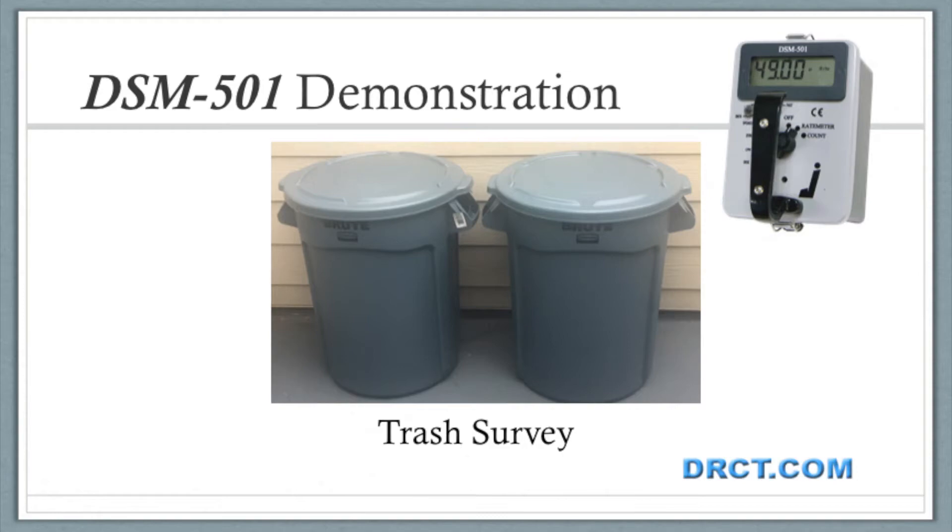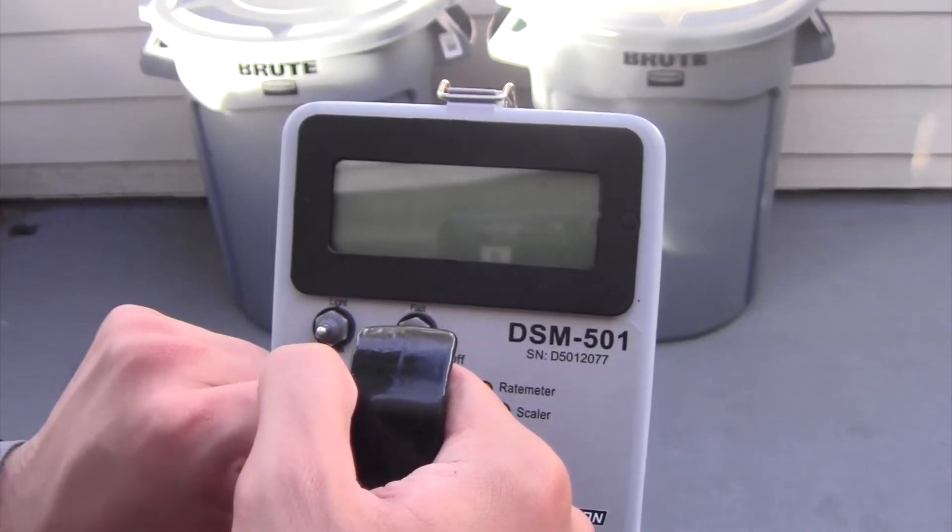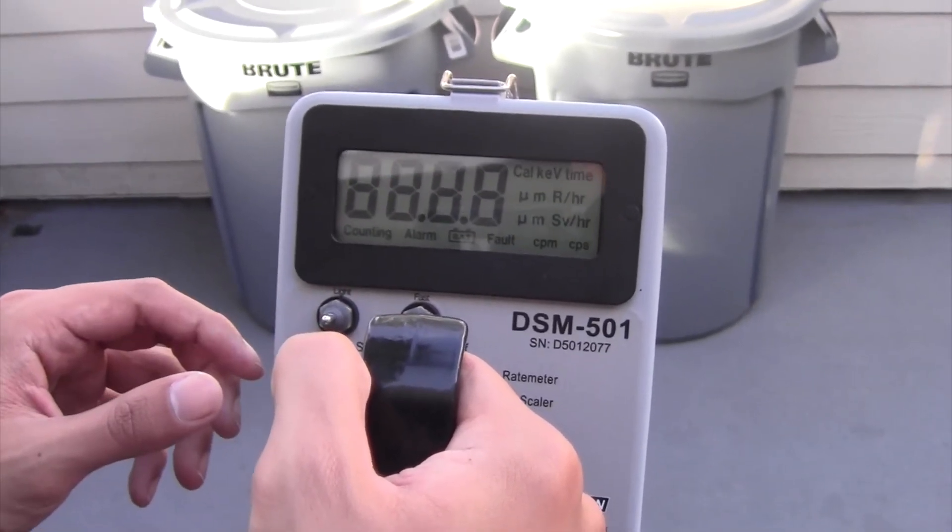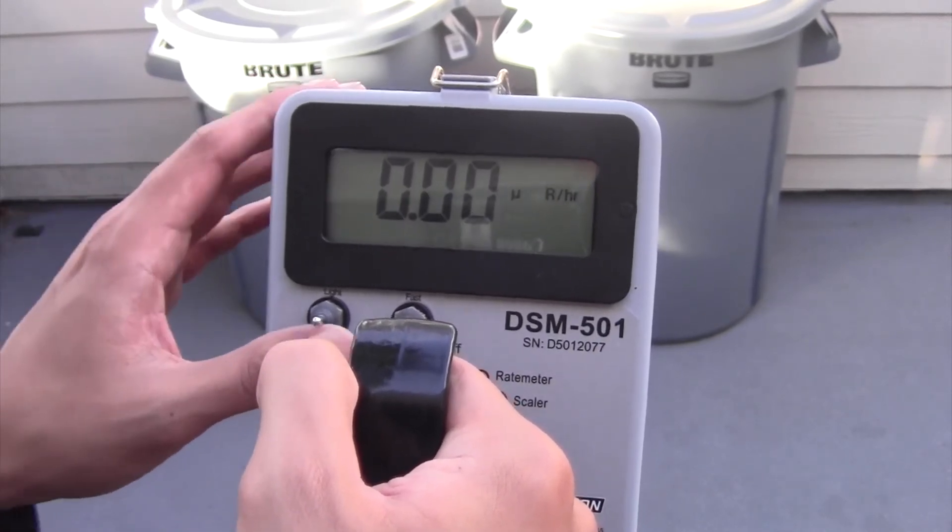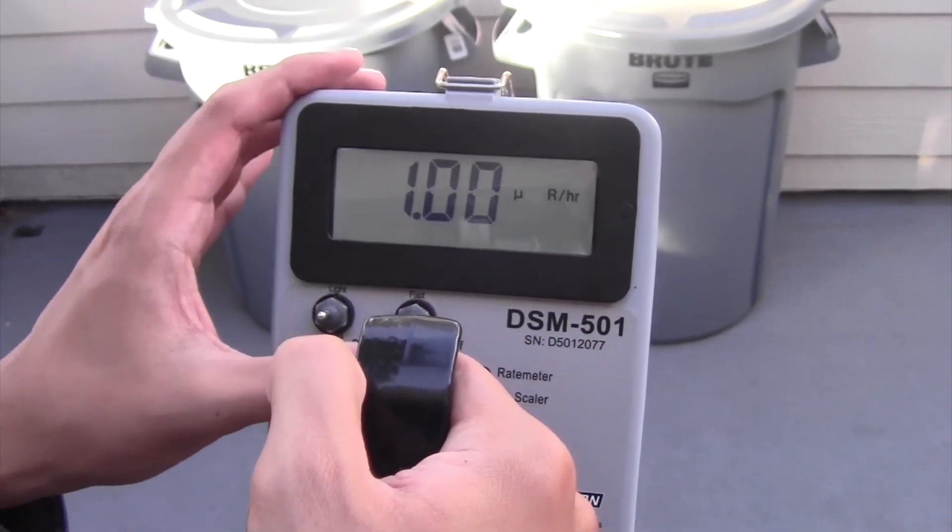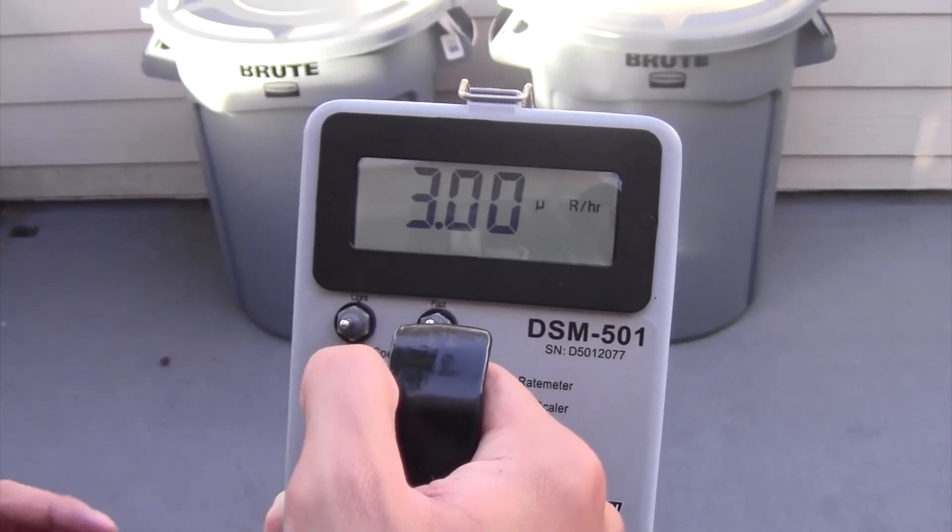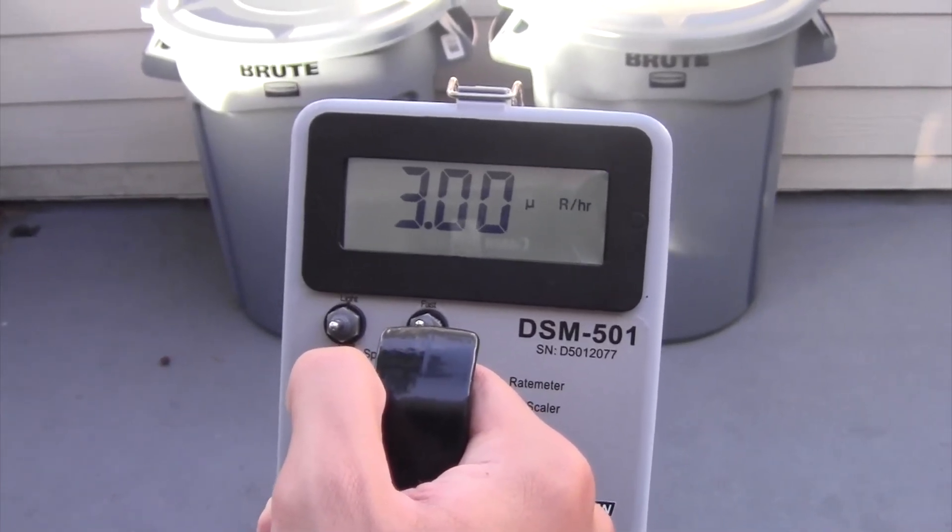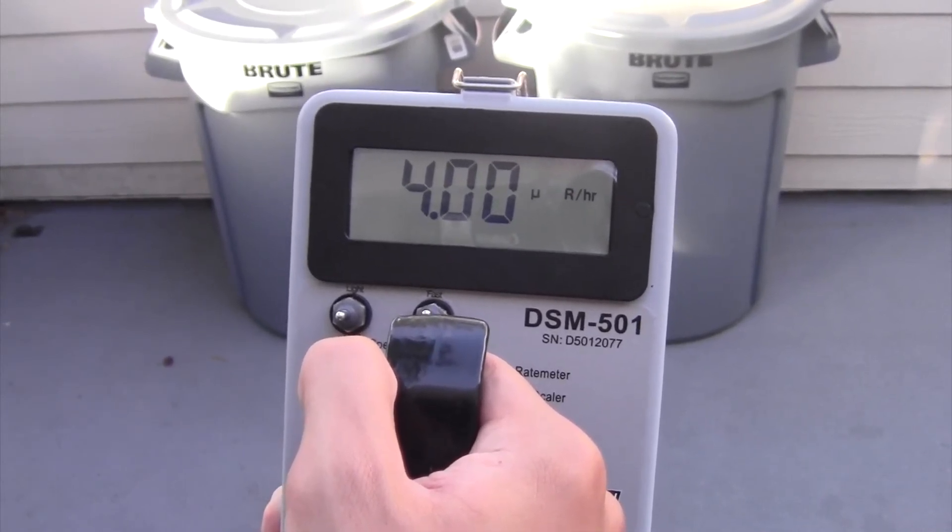For a demonstration of field use, today we will survey a bit of trash. For quick start survey, power up in rate meter dose mode. Make sure the unit is switched to fast mode and the speaker is turned on. First, observe normal background readings. We know that the operational alarm is set appropriately at somewhat higher than twice background.